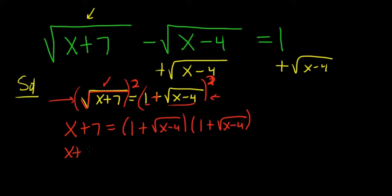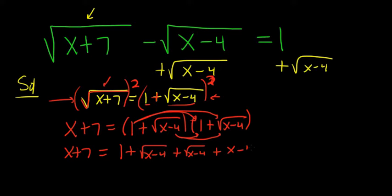So we have x plus 7. And then now we'll FOIL. So 1 times 1 is 1. And then 1 times this is the square root of x minus 4. And the inside pieces give us the square root of x minus 4. And then this times this, well, the square roots will cancel, so we'll just get x minus 4. All right, let's keep going.